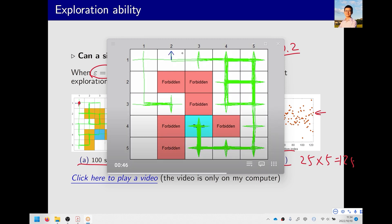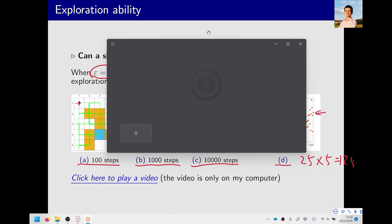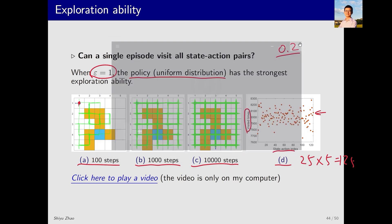Because of its strong exploration ability, it has again moved to another side. Up to this point, almost all states have been visited, but some actions have yet to be explored. Let's see if it can eventually explore these actions as well. As we can see now, these actions have been explored too. Thus, this example demonstrates more vividly that its exploratory nature is quite strong. A single episode has indeed visited all states and actions.